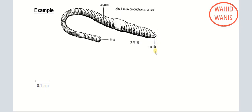Now let's talk about magnification using a scale bar. In this diagram, there is a scale bar labeled 0.1 millimeter. When I measure that scale bar line, it is 1 centimeter long. This means that every 1 centimeter on the drawing is equal to 0.1 millimeter in real life.